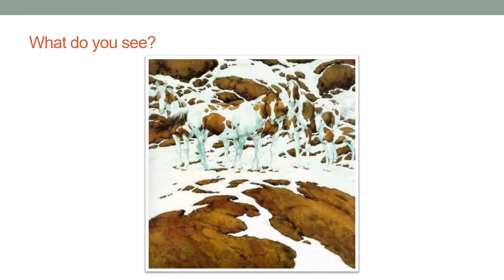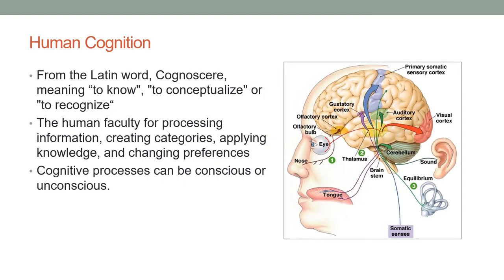Going back to elements of image interpretation — here is a picture: what do you see? Different people might interpret this image differently. Do you see a snow field, horses standing there, or both? This speaks to human cognition. The word cognition comes from the Latin word cognosir, meaning to know, to conceptualize, to recognize. The human faculty for processing information, creating categories, applying knowledge, and changing preferences is very special — it is what makes us human. Cognitive processes can be conscious or unconscious.